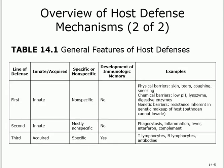Comparing the two: non-specific is first and second line; specific is third. The first and second are innate; the third is acquired. You are born with both first and second, and both are non-specific. Another difference: the non-specific does not include memory. You don't remember what happened before — you just take care of things blindly. The third line does have memory, and we will discuss all the details.